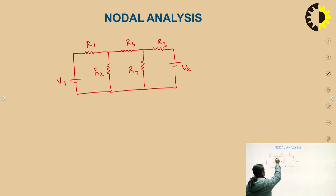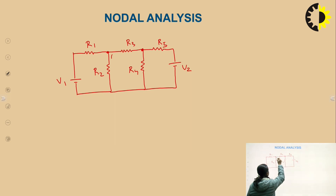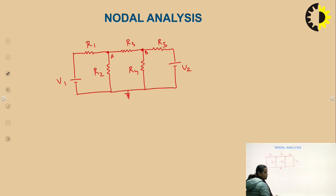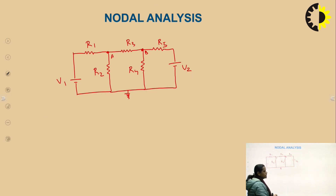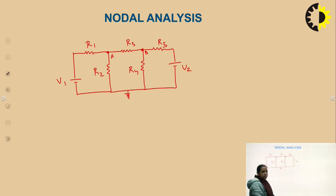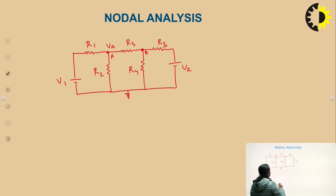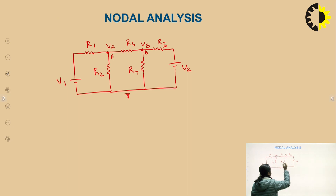We can see that these are the major nodes. Suppose this is node A and this is node B, and this will be taken as the reference node. With reference to this, we will take the voltage. The voltage at this particular node is VA, and here we have assumed node voltage VB.